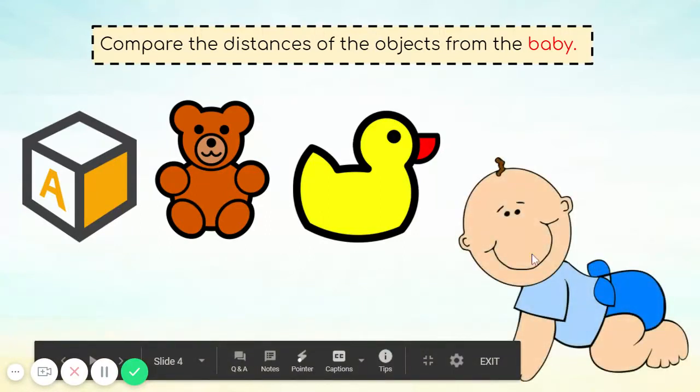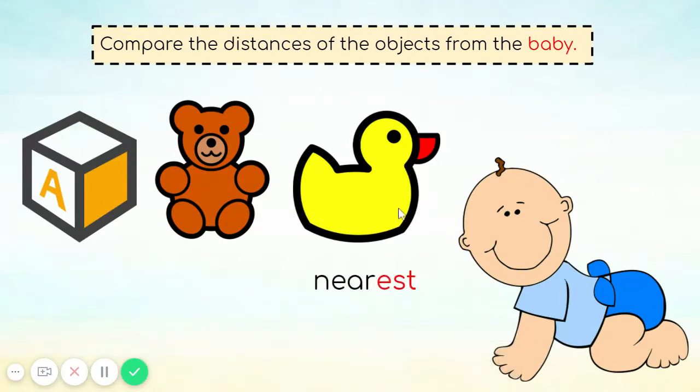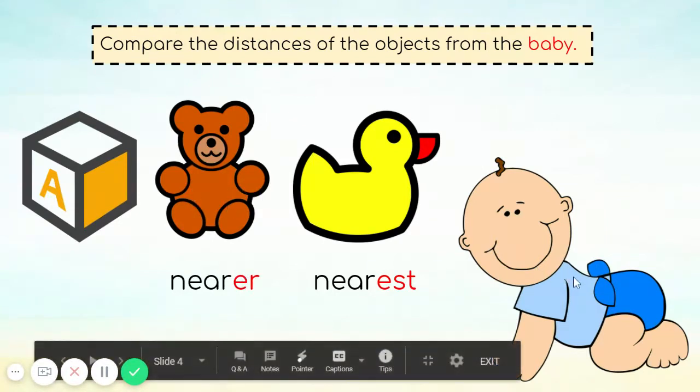Here's the baby. The duck is the nearest, the teddy bear is nearer to the baby, and the cube is nearer to the baby.